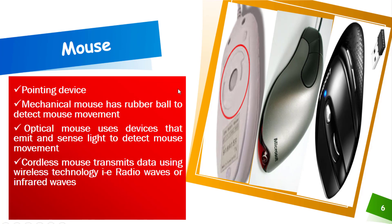Next we have the mouse, which is basically a pointing device. There are 3 types of mouse. First is the mechanical mouse, which has a rubber ball to detect mouse movement — you can see the highlighted rubber ball here. Next is the optical mouse, which uses a device that emits and sends light to detect mouse movement. Next is the cordless mouse, which transmits data using wireless technology — radio waves or infrared waves. This is also called a wireless mouse, and you can see the picture here.